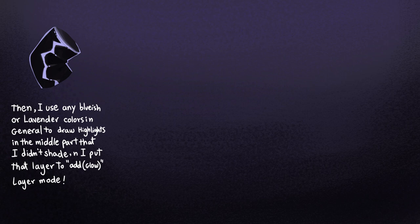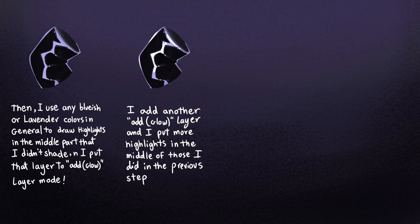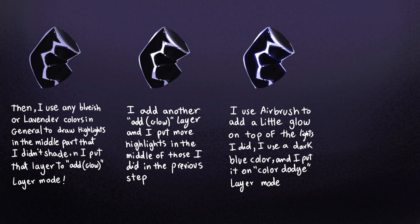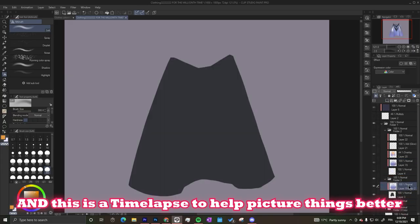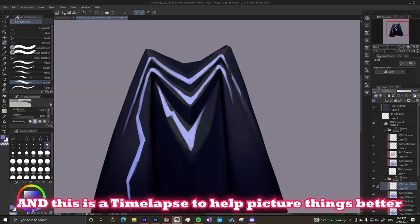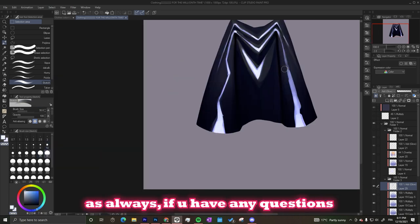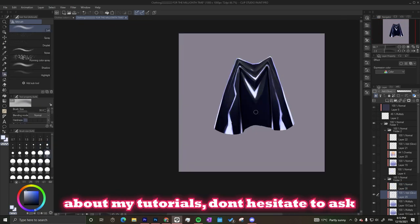Then I use any bluish or lavender color to draw highlights in the middle part I didn't shade, and put that layer to 'Add Glow' layer mode. I add another 'Add Glow' layer and put more highlights in the middle of those I did in the previous step. I use an airbrush to add a little glow on top of the lights, then a dark blue color on 'Color Dodge' layer mode. Finally, I add little gray parts on the edges to make it look like a reflection — this is what makes it look like leather.